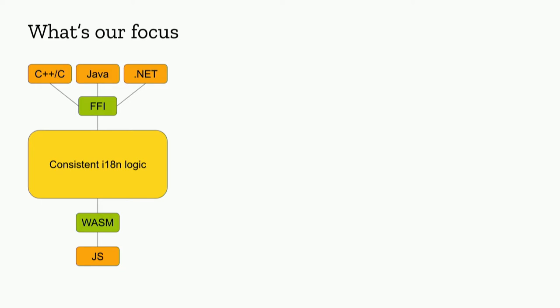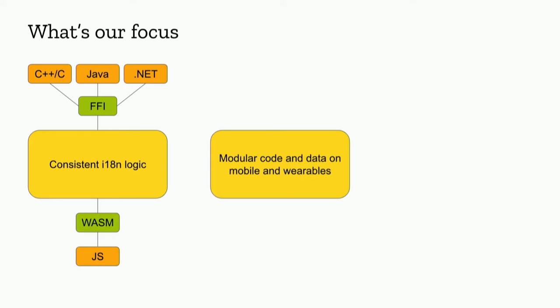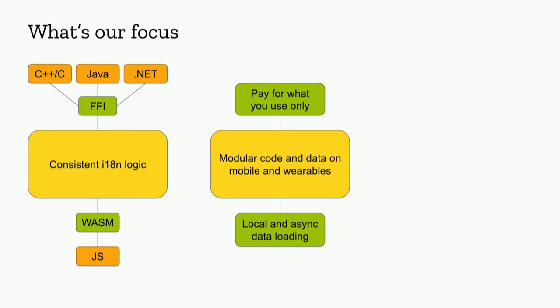You can also use WebAssembly — we transpile code to WASM and then load it into your JavaScript. The second goal is to have modular code and data that you can use on less powerful devices like wearables or mobile. You should be paying only for what you use, not introducing the whole kitchen sink into your product. We also aim to allow loading data locally and from async services, like a CLDR-as-a-service approach. We are laser-focused on performance, size, and security.